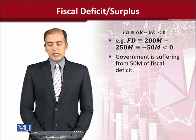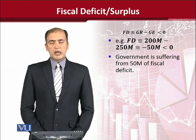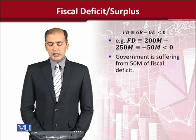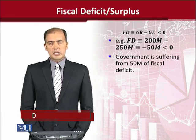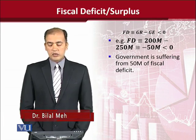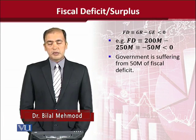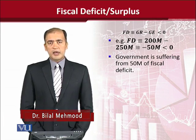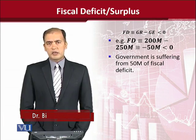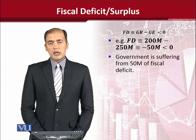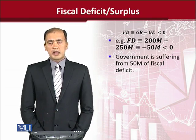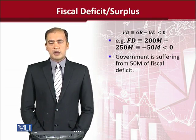Numerically speaking, Fiscal Deficit is calculated here. The Government Revenues in this example are 200 Million and the Government Expenditures are 250 Million. The difference of which is minus 50 Million, which shows that there is a Fiscal Deficit of 50 Million.